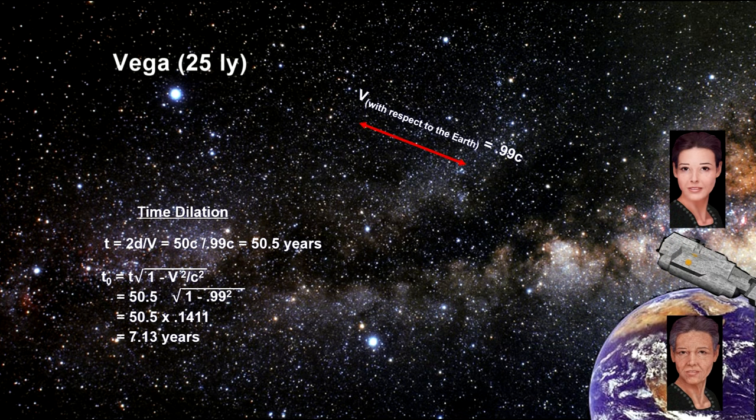At 99% of the speed of light, time dilation would have the twin at just over 27 years old on her return.